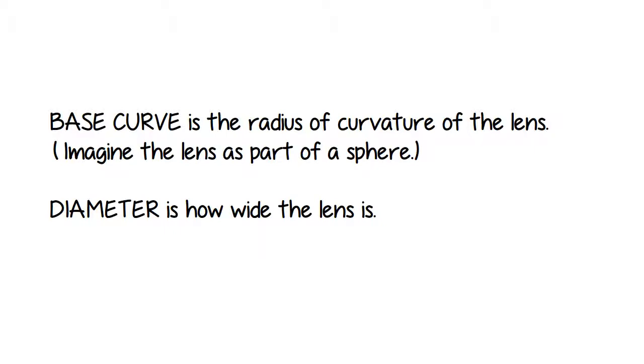The base curve of the contact lens is the radius of curvature of the lens. The diameter is how wide the lens is. It's the relationship between the diameter and the base curve that tightens or loosens the fit of the contact lenses. Tightening or loosening, what does that even mean? Well, let me show you.